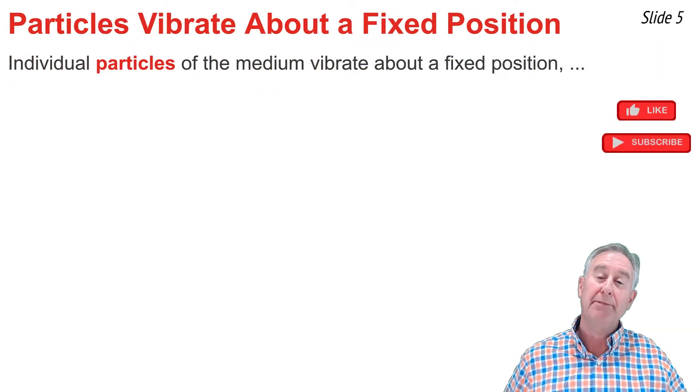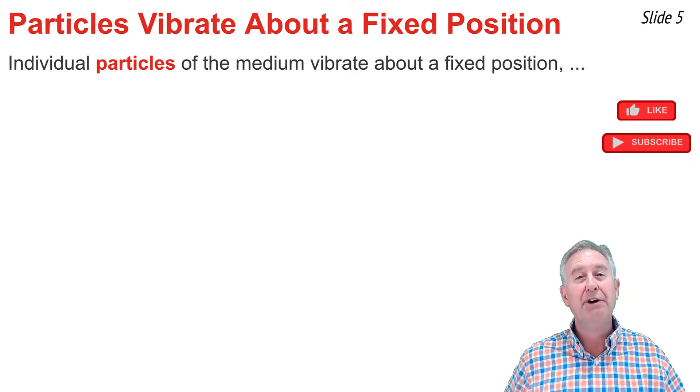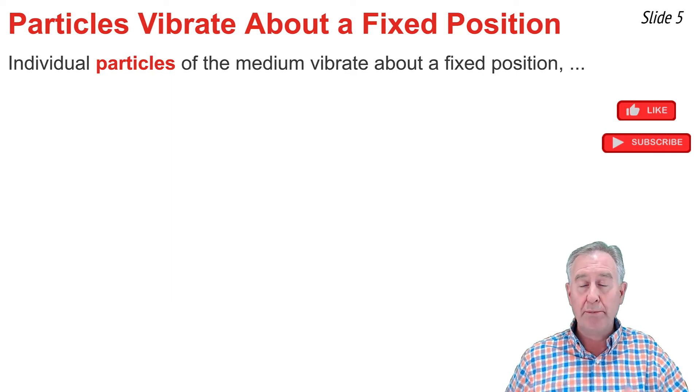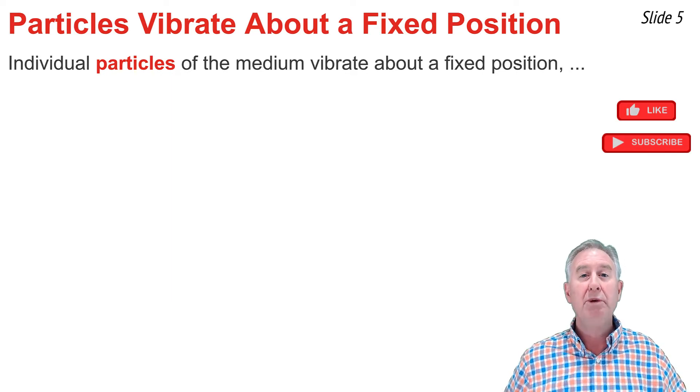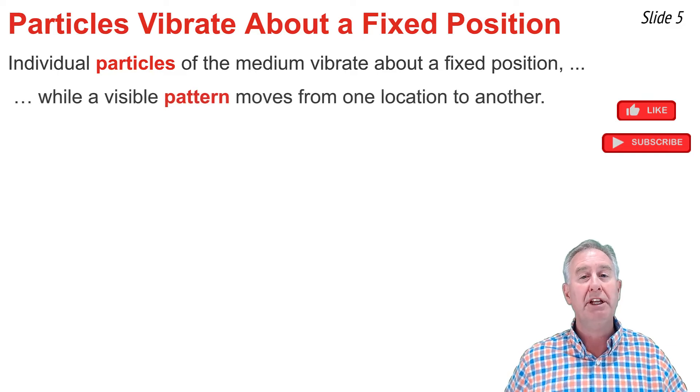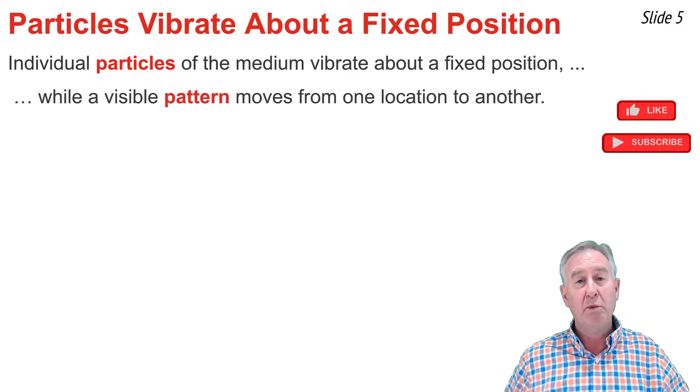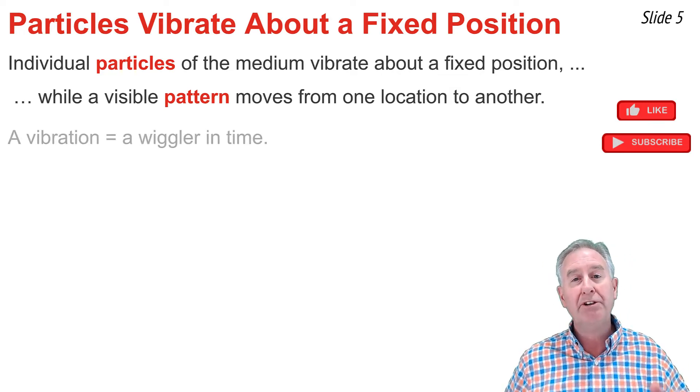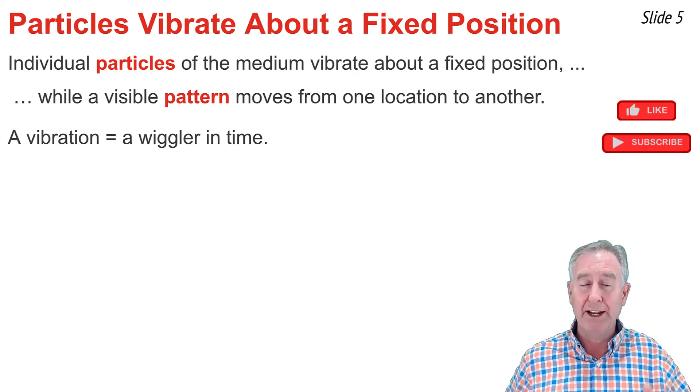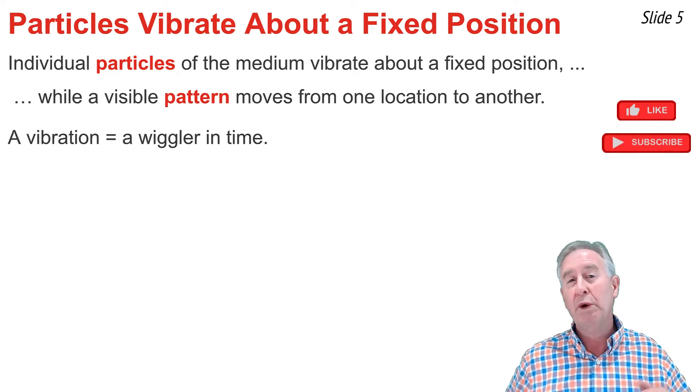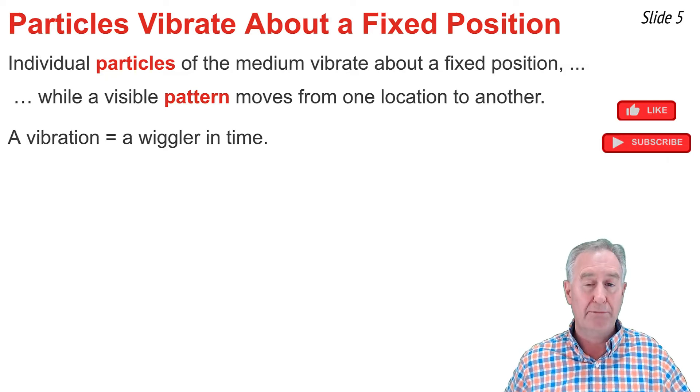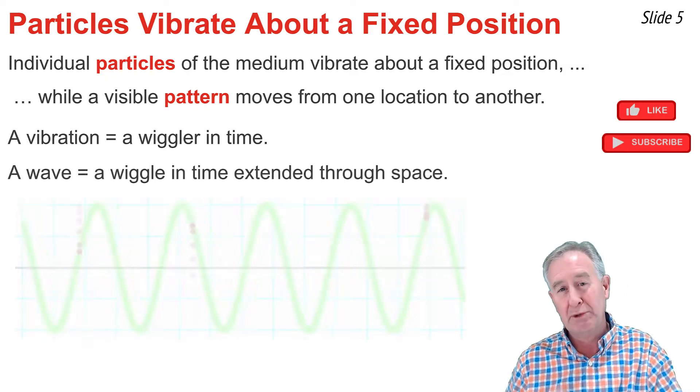Mechanical waves travel through a medium, and as they do, the individual particles of the medium vibrate back and forth about a fixed position. As those vibrations spread from one particle to the next particle, we begin to see a visible pattern established within the medium that we refer to as a wave. That wave is what moves from one end of the medium to the other end of the medium. But the particles themselves do not move. They simply vibrate about a fixed position. They're wigglers over the course of time. I like to think of the particles as wiggling, but the wave as moving. It's a collection of particles, a wiggle in time, that extends through space.